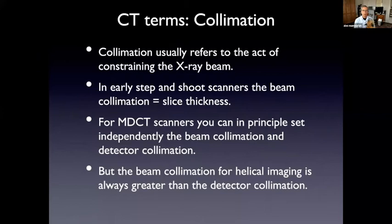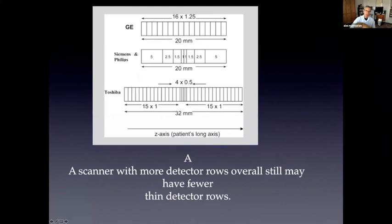Another term that will come up is collimation. This refers to the constraint of the x-ray beam. So there's x-ray beam collimation. In the early scanners, the beam collimation was the same as the slice thickness. It's different for multi-detector scanners because even though in theory you can set the beam collimation differently than the detector collimation, the beam collimation has to always be greater than the detector collimation. So usually the beam collimation is always slightly wider than the detector rows.